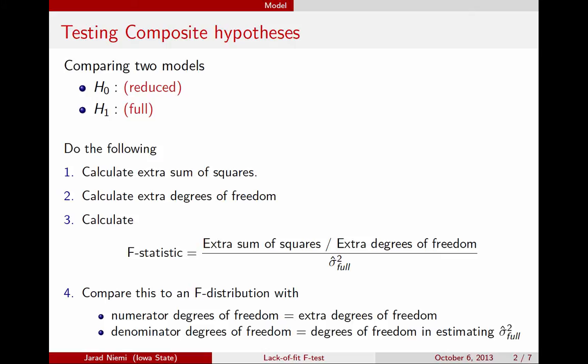We looked at the number of parameters in the two models and took the difference, and we called that the extra degrees of freedom. We used those quantities in the numerator of this F-statistic, and the denominator was the estimate of the variance for the full model. We compared this F-statistic to an F-distribution with degrees of freedom that were in the numerator, the extra degrees of freedom, and the denominator, the degrees of freedom associated with estimating the variance in the full model. That was the number of observations n minus the number of parameters for the mean in the full model.